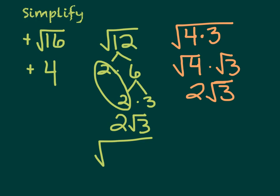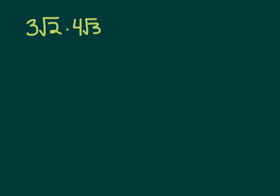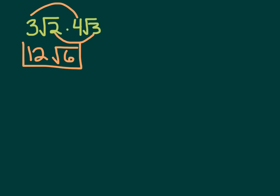Let's simplify 3 root 2 times 4 root 3. When you have two mixed parts like this, multiply the 3 and the 4 together to get 12, and multiply the square root of 2 and the square root of 3 together to get the square root of 6. So when multiplying mixed radicals, put the whole numbers together and put the radicals together.